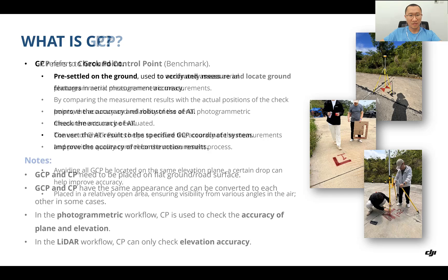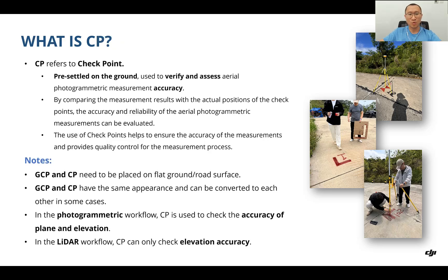What is CP? CP refers to checkpoint. It is also pre-settled on the ground and used to verify and assess aerial photogrammetry measurement accuracy. By comparing the measurement results with the known position of the checkpoints, the accuracy and reliability of the aerial photogrammetry measurements can be evaluated. The use of checkpoints helps ensure accuracy and provides quality control for the measurement process.